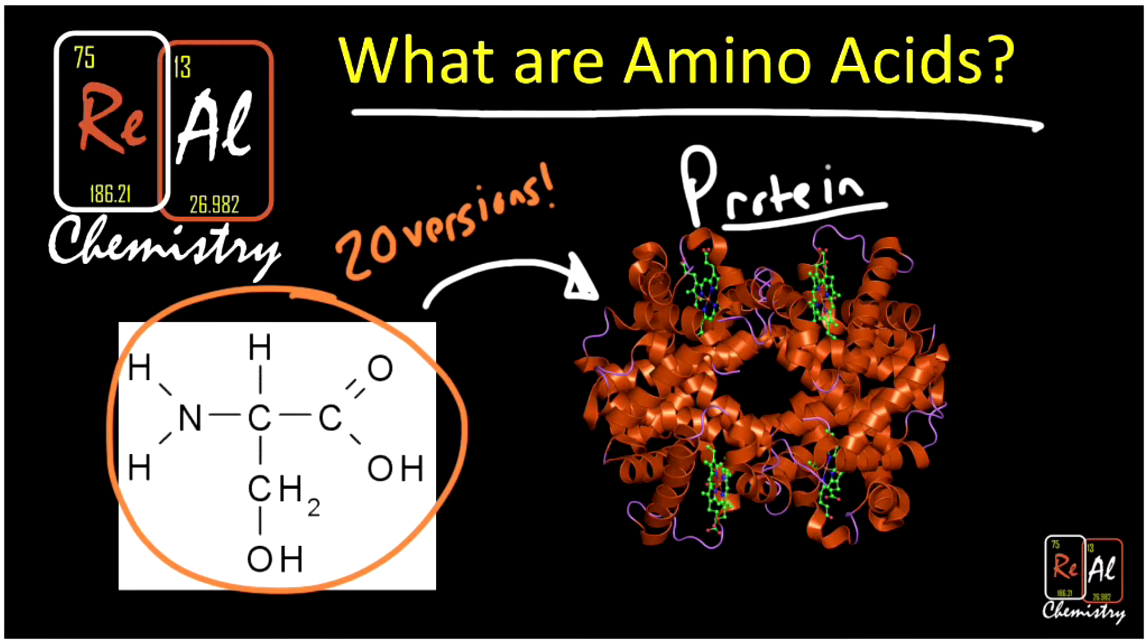This guy on the right is a protein, and so proteins are what are built from amino acids. So the basic answer to what are amino acids is they're the building blocks of protein. This specific protein here is hemoglobin. You may have heard of it. Hemoglobin carries oxygen around your body in red blood cells, so really important.